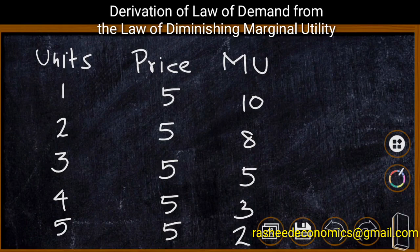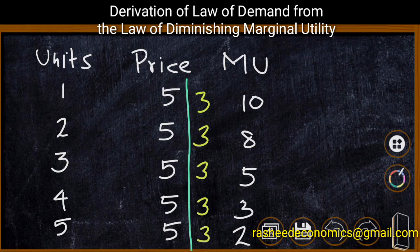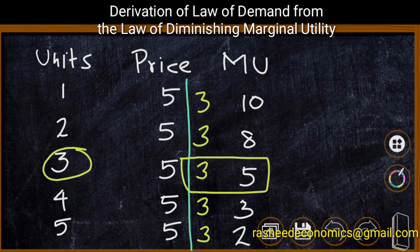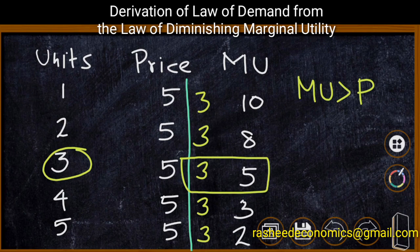Now, let us assume that the price of the commodity is going to decrease from 5 to 3. It means that for all the 5 units, the consumer needs to pay only 3 rupees. Price of the commodity has been decreased from 5 to 3. At this stage, the basic equilibrium point was at the 3rd unit of consumption, and it is clear that marginal utility is greater than price. The equilibrium condition is disturbed — marginal utility is now higher than price.